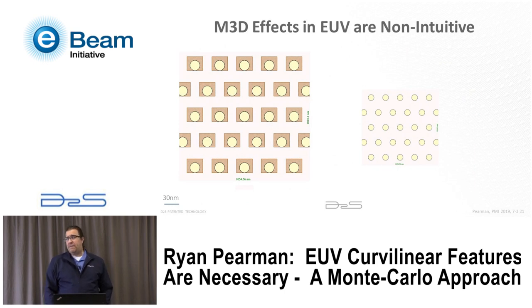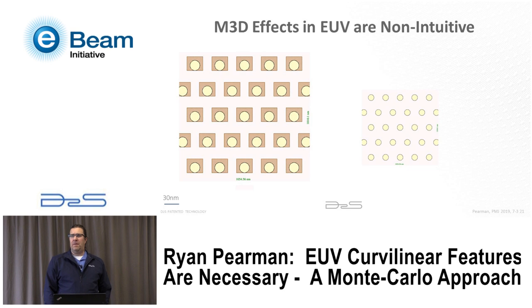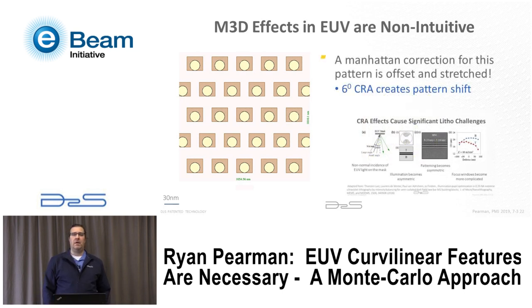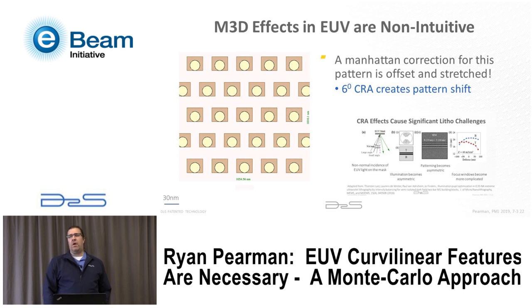Moving to the Manhattan version of the EUV solution: printing the same 20nm contact target, I now use a set of shifted elongated rectangles that actually print this target — which is not intuitive. Immersion lithography would have these be centered squares; EUV is different. The optimal or close-to-optimal correction is a set of shifted ovals, which is actual reality for this system.